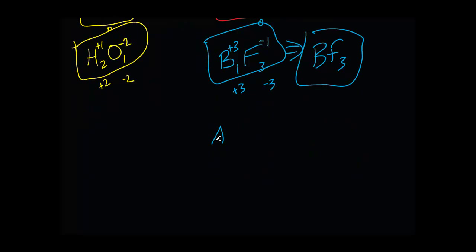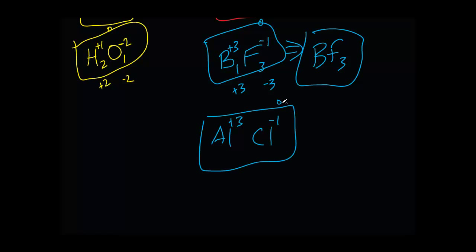Let's combine aluminum and chlorine. Write the elements and draw the charges: aluminum is in group 3, so it's plus 3, giving its electrons to the more electronegative chlorine. Chlorine is a group 7 — its charge is always minus 1. Plus 3 minus 1 is not 0, so we need the least common multiple between 3 and 1 to find the number of atoms. One atom of aluminum gives plus 3 times 1 equals plus 3, and three atoms of chlorine give negative 1 times 3 equals negative 3. So aluminum chloride is written as AlCl₃ — not Al₂Cl or AlCl.